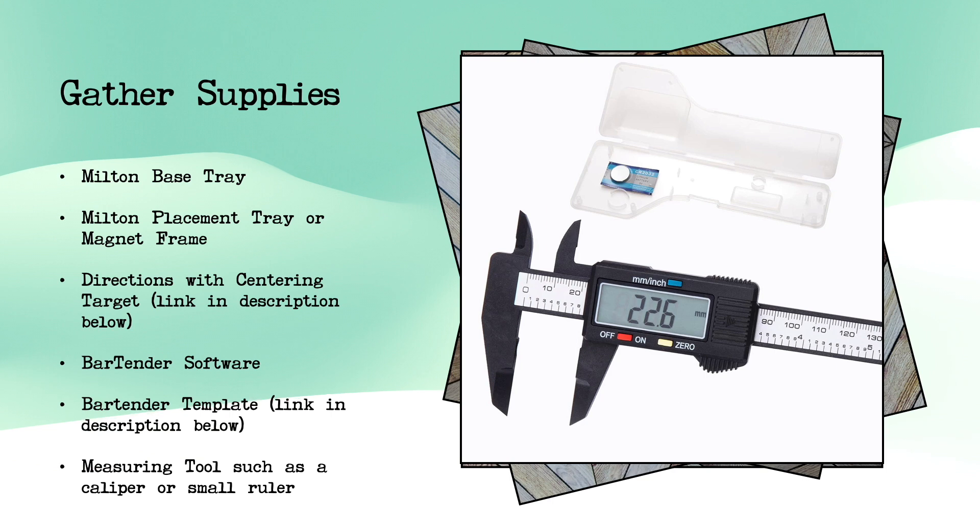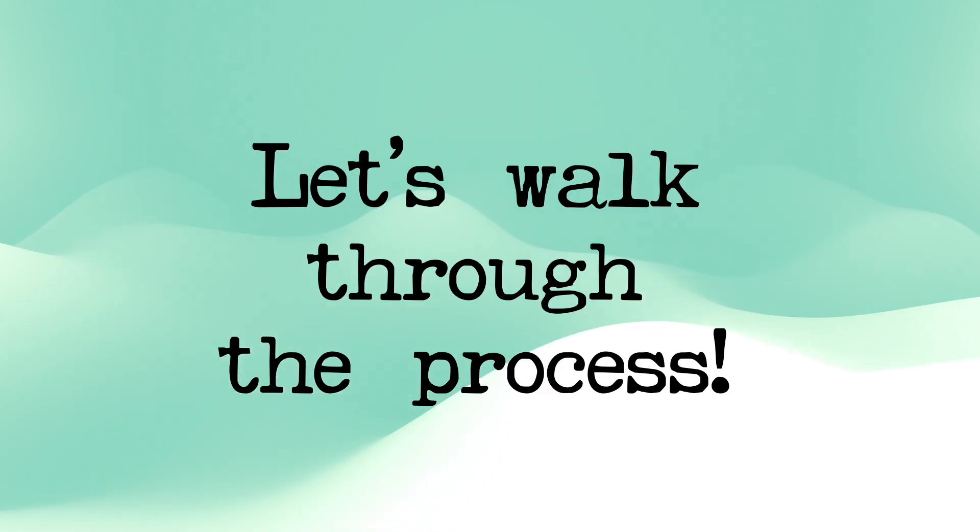Then lastly, I find I use my digital caliper a lot. I use it and purchased it when I started 3D printing. Now I use it in my cookies all the time when it comes to Eddie. So if you don't have one of these, you might want to invest. I think you can pick one up for less than $10. Now that you've got everything gathered up, let's walk through the process on the computer with Eddie.